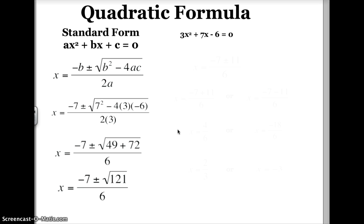I'm almost done. The next thing I'm going to do is solve for the square root of 121. Fortunately for me, the square root of 121 is an integer, is 11. So I have -7 plus or minus 11, divided by 6.